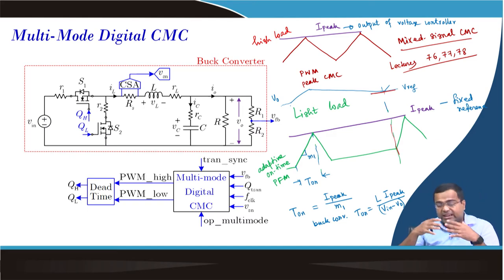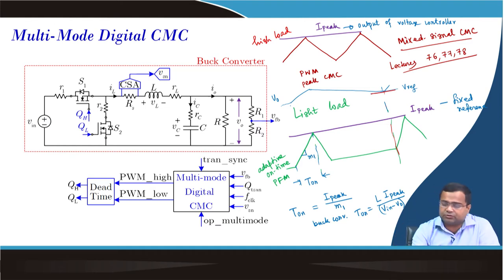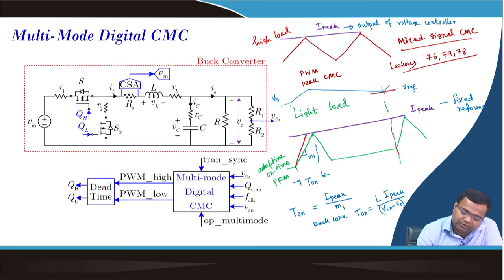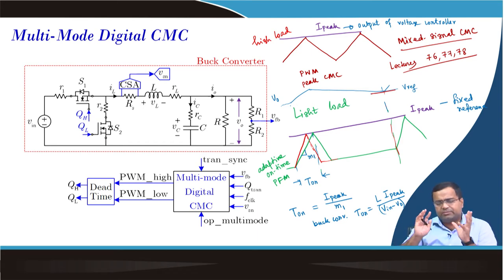This on-time is not a timer-based on-time. It is coming from the inner current loop, where the switch will be turned on and the inductor current will rise and will compare with the peak current in the analog domain, because this will be using that. That will generate the on-time. The good thing here is if the input voltage increases, then this will go fast and it will come down here. That means T_on will decrease if the input voltage increases, so your charge injection will remain the same, but the switch on-time will be different.